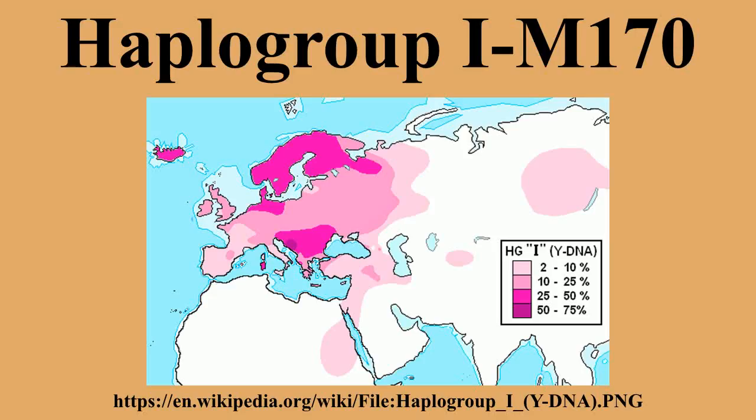In human genetics, Haplogroup I-M170 is a Y-chromosome DNA haplogroup, a subgroup of Haplogroup IJ, itself a derivative of Haplogroup IJK. I-M170 is one of the most numerous haplogroups among European males. It can be found in most present-day European populations, with peaks in some northern European and southeastern European countries.